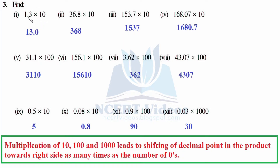For 36.8 × 10: forget the decimal, multiply 368 × 1 is 368. Count number of zeros — 1. Move 1 place towards right — therefore 368 whole number. For 153.7 × 10: forget decimal, 1537 × 1 is 1537. Move one place towards right because 10 — it is again a whole number. For the next problem: multiply with 1 to get 16807 — anything multiplied by 1 gives the same number. Count zeros: 1. Shift 1 place towards right.